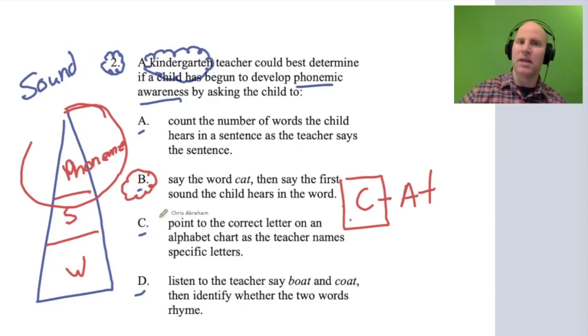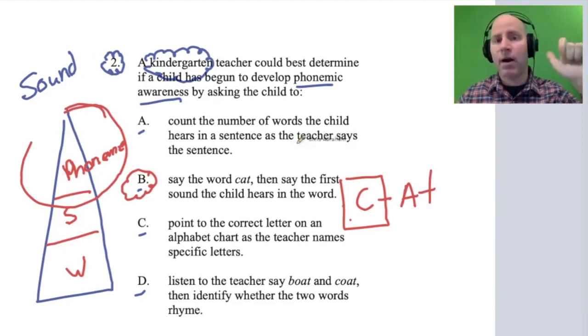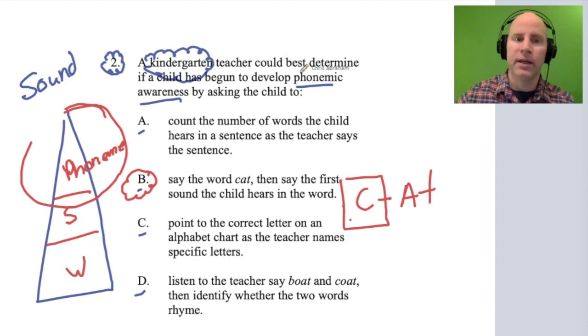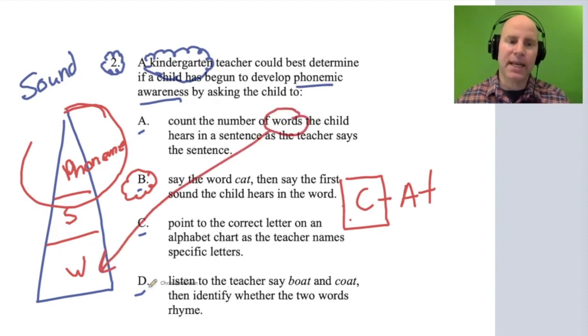Now let's rule out the other ones just for good measure. A has to do with counting words that the child hears in a sentence—the teacher saying "how are you," and the child saying "I hear three words." This is a word-level activity, basic phonological awareness.